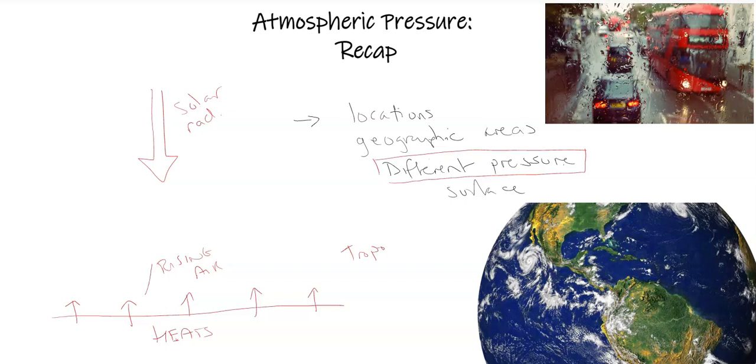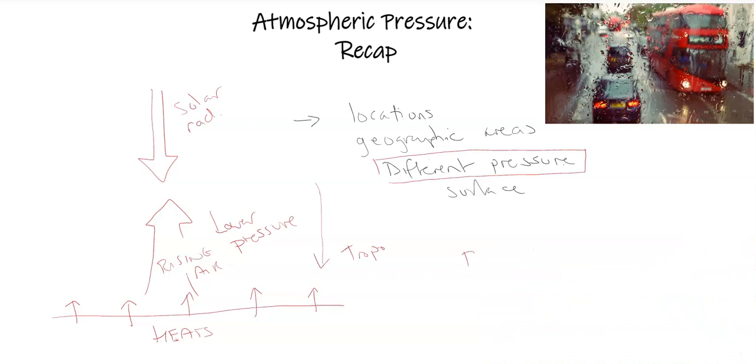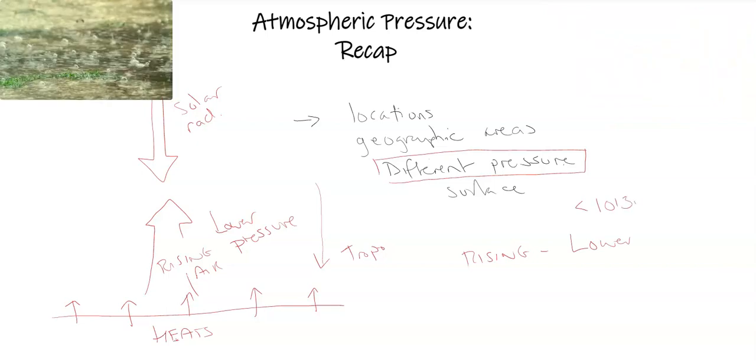So this rising air would lower the air pressure at this particular location or location on the surface, geographically. And if some air is rising, then we have to have an area, because that's the balance out within the troposphere, where the air is sinking. So there is an area of rising air, which would make the pressure lower. So lower than 1,013 millibars.